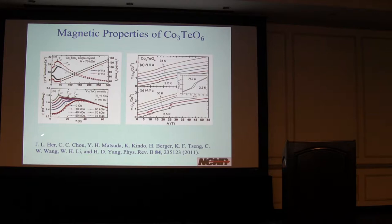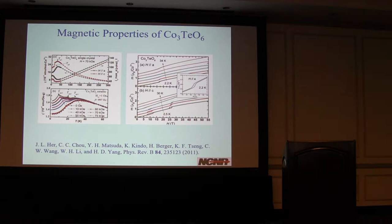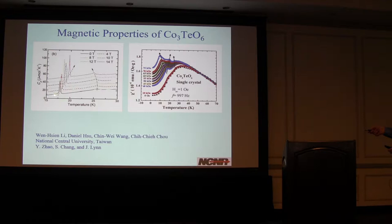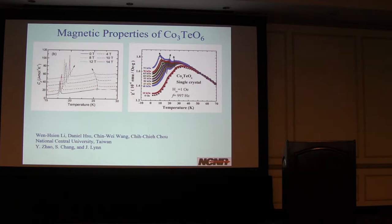The first example was done by her and collaborators, and they found a number of different phase transitions. These are DC susceptibility measurements done as a function of various magnetic fields. They found ordering at about 26 Kelvin and another phase transition down here that splits under a magnetic field, and they really didn't understand what was going on in these materials. Looking at the specific heat as a function of various magnetic fields, you see a nice phase transition around 15 Kelvin that is quite field dependent.